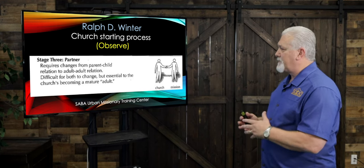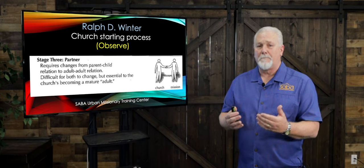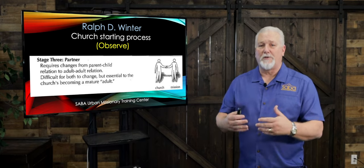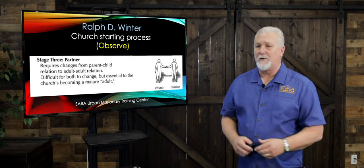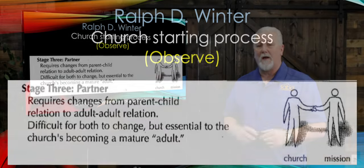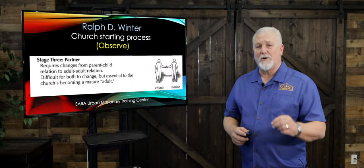In the step we call Observe, the teacher observes the student doing the process to make sure everything is done as it should be. In this step, according to Ralph Winter, there is a change of relationship between the missionary and the church. The church is coming of age, and the missionary is observing to make sure everything is done correctly within that language and cultural context.